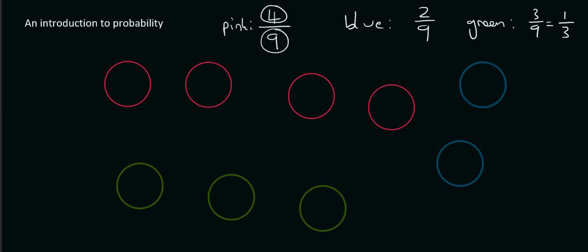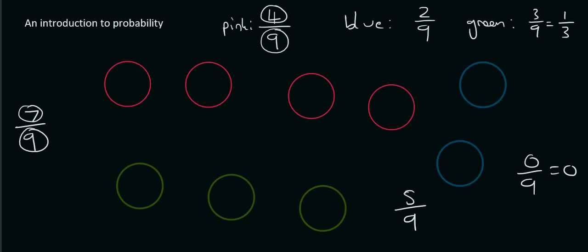What would be the probability of choosing a pink or a green? That's going to be seven out of nine, because you don't mind which one — you just want a pink or a green, so you've got a chance of seven out of nine. What are the chances of getting a green or a blue? That's five out of nine. What are the chances of getting an orange? That's zero out of nine, because there aren't any orange.